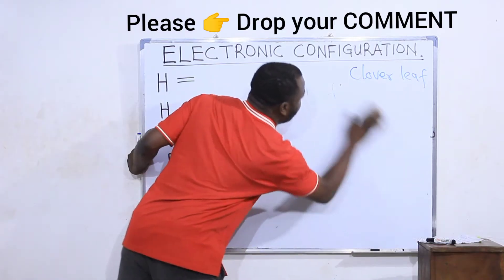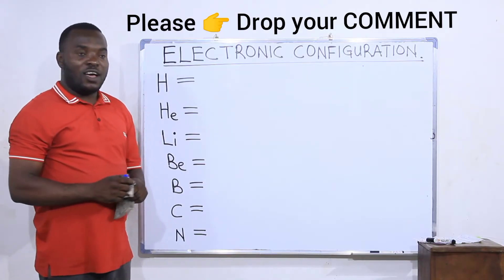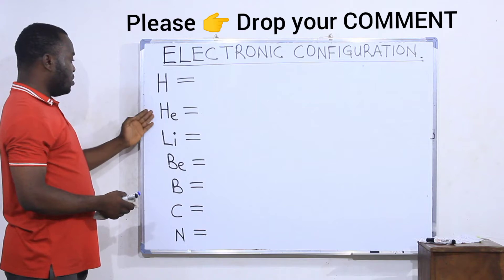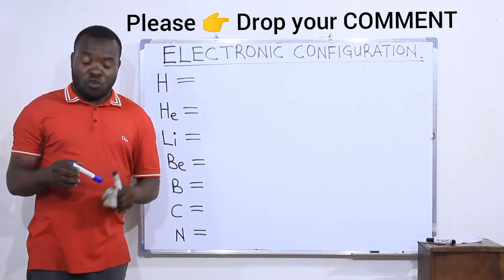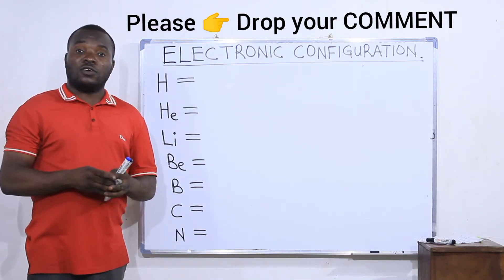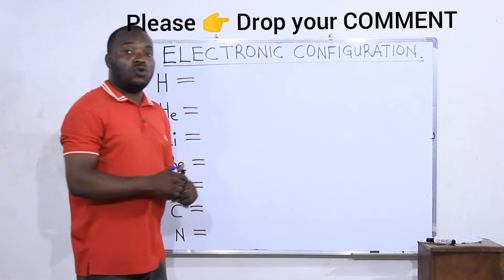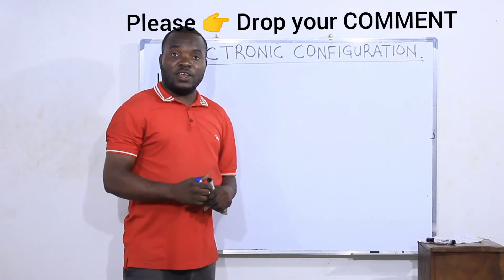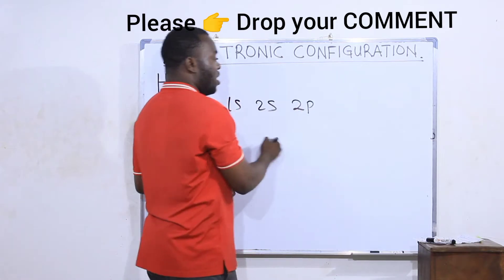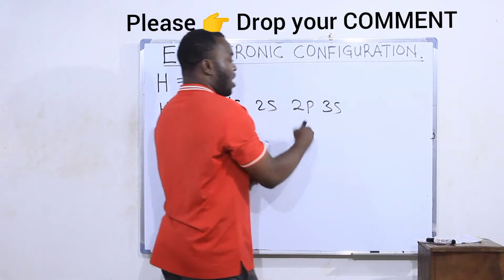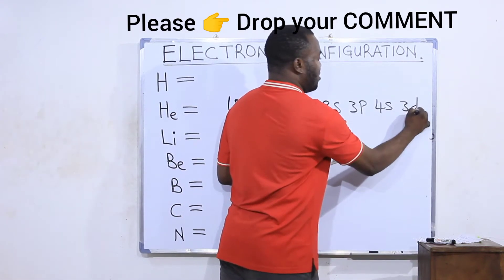Now let's see how to write electronic configuration. We'll write configurations for hydrogen, helium, lithium, beryllium, boron, carbon, and nitrogen. Before writing any electronic configuration, you need to know how to construct the orbitals according to their energies. After 1s the next is 2s, after 2s is 2p, after 2p is 3s, after 3s is 3p, after 3p is 4s, after 4s is 3d, and so on.